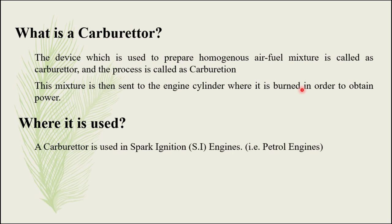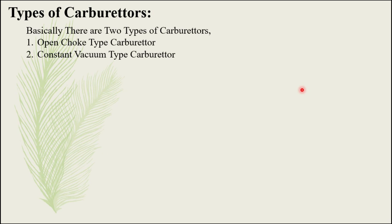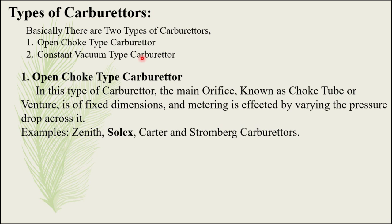Now, where is the carburetor used? A carburetor is used in spark ignition engines, also called petrol engines or SI engines. Basically there are two types of carburetors: the first one is open choke type carburetor and the second is constant vacuum type carburetor.